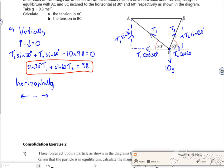So what have we got going left then? So I've got T1 cos 30 going left. There's nothing else going left. Going right, I've got T2 cos 60 is equal to zero.